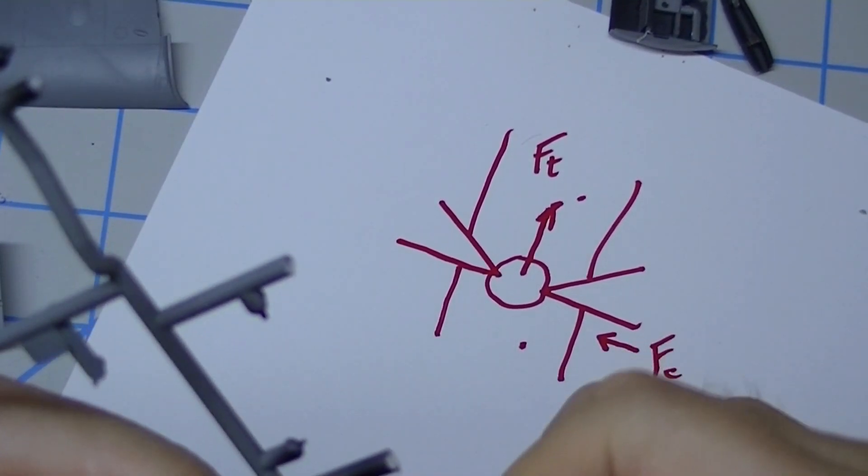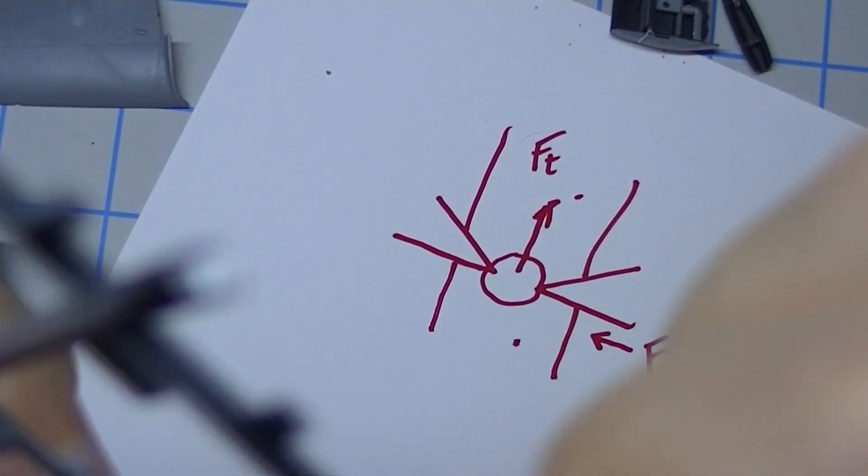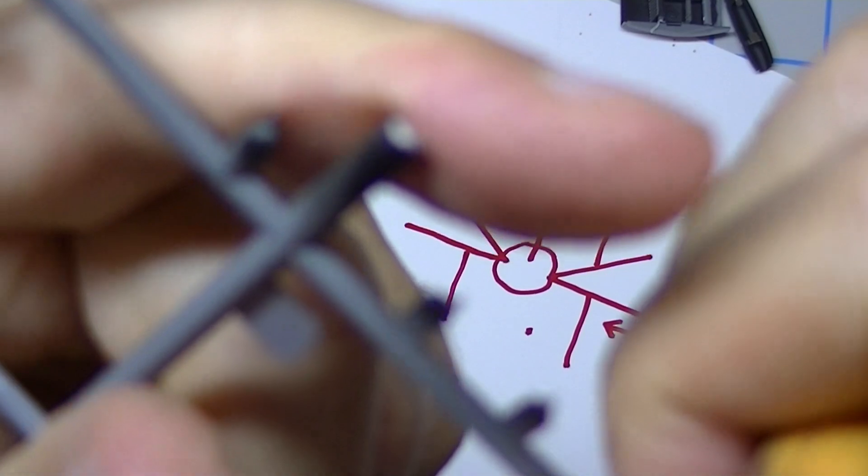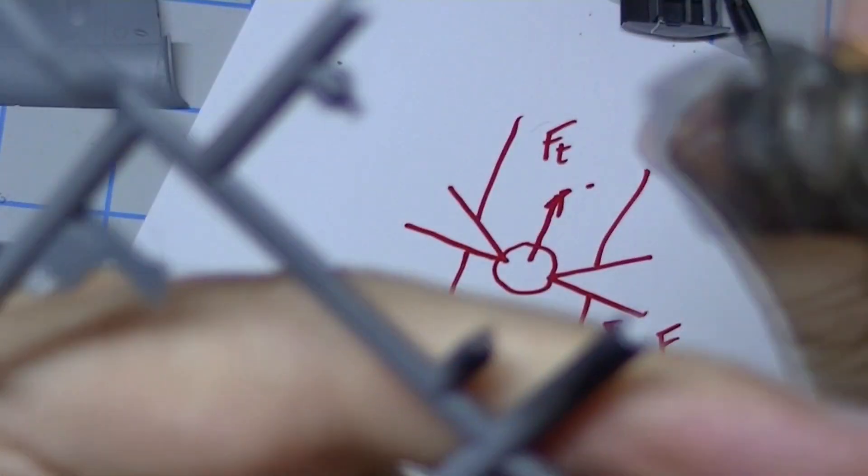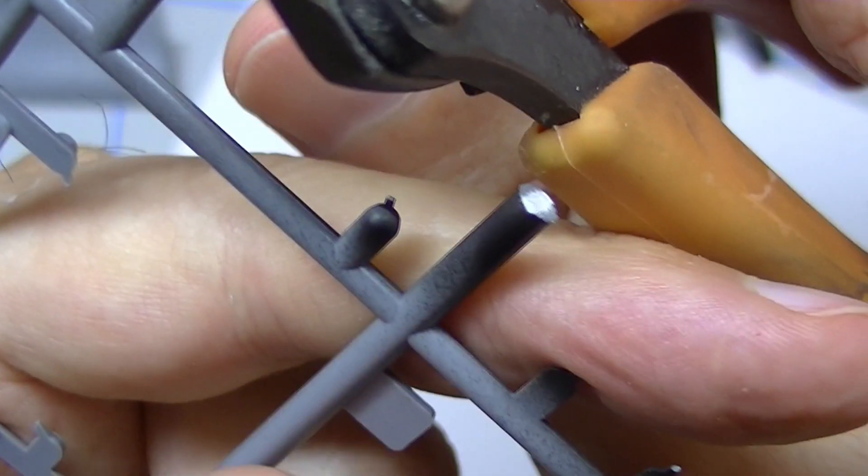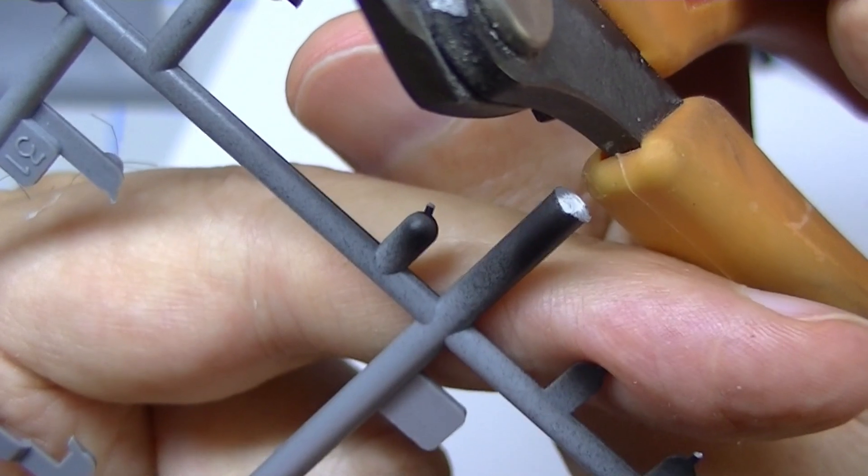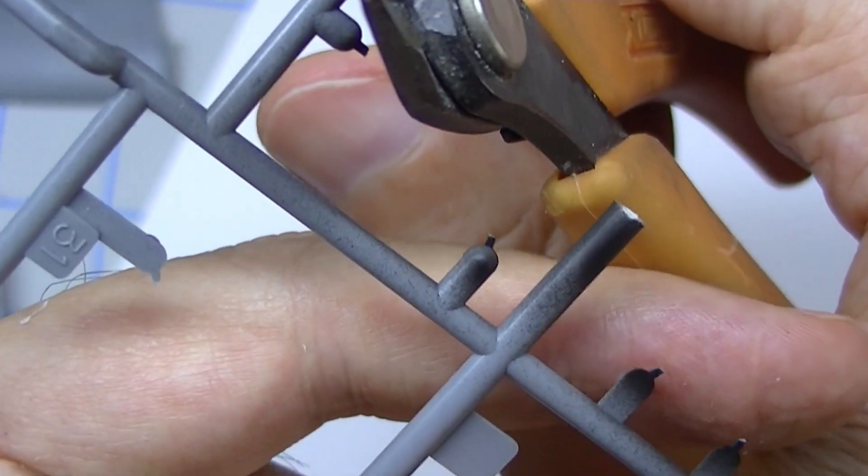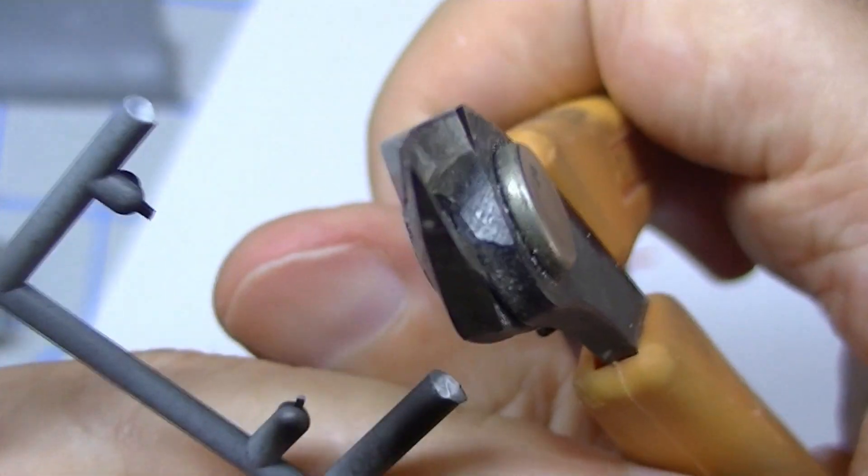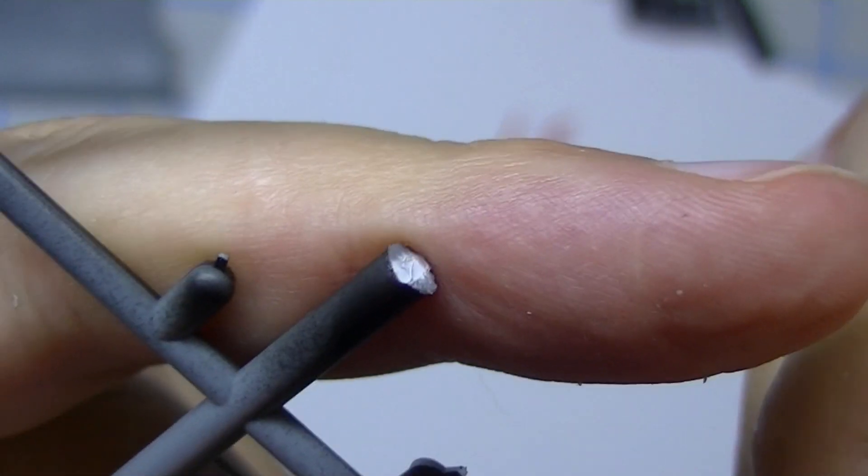But still, that's why the part goes flying off into never-never land. It's a better cut than the other one because the more obtuse the angle of the wedge is, the more force you apply. And so when it finally snaps, it's going to be worse. But still, you can see exactly what I'm talking about.